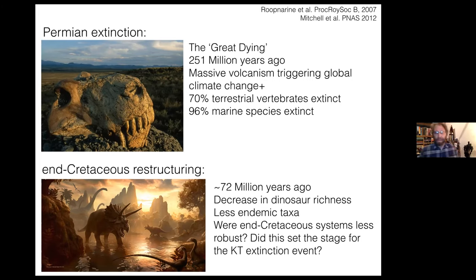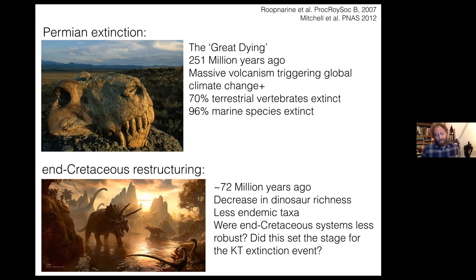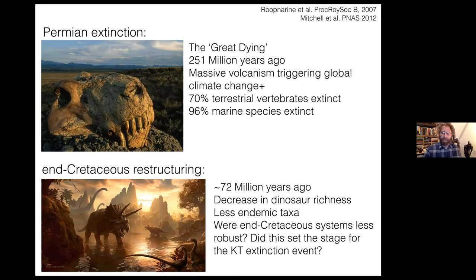Towards the end of the Cretaceous, we have the end-Cretaceous restructuring, about 72 million years ago. This was a little more subtle — there was a decrease in dinosaur richness and fewer endemic taxa. One of the big questions has always been whether end-Cretaceous systems were less robust due to this restructuring. Did this event set the stage for the KT extinction? Would non-avian dinosaurs have gone extinct if this restructuring hadn't happened? Did this restructuring really erode the robustness of the system so that the asteroid impact had a larger effect than it otherwise would have?